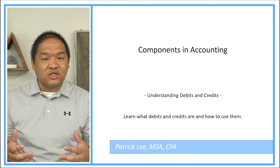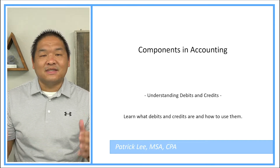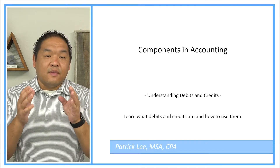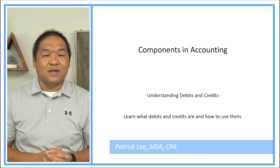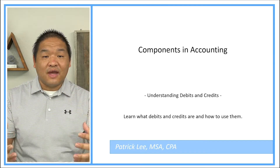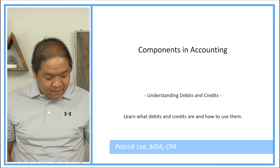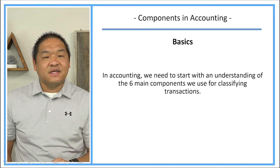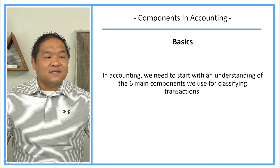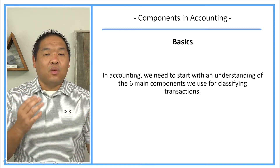The way we do that is through this system of journal entries and debits and credits — that is the language we use so that everything is organized within our accounting information system. In this lesson specifically, we're going to help you understand the different components in accounting. It's kind of that first layer of understanding we'll build upon as we get closer to talking about debits and credits. In accounting, we need to start with an understanding of the six main components we use for classifying transactions — six buckets that we're trying to organize all transactions into.